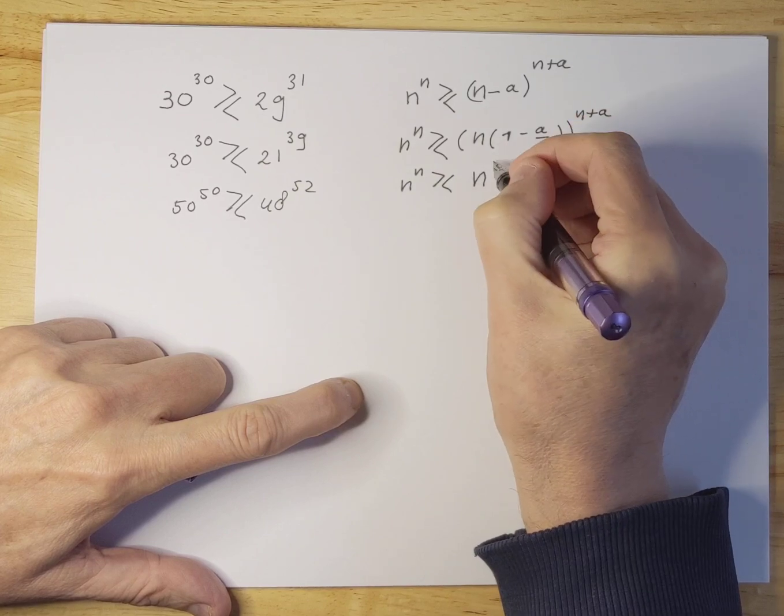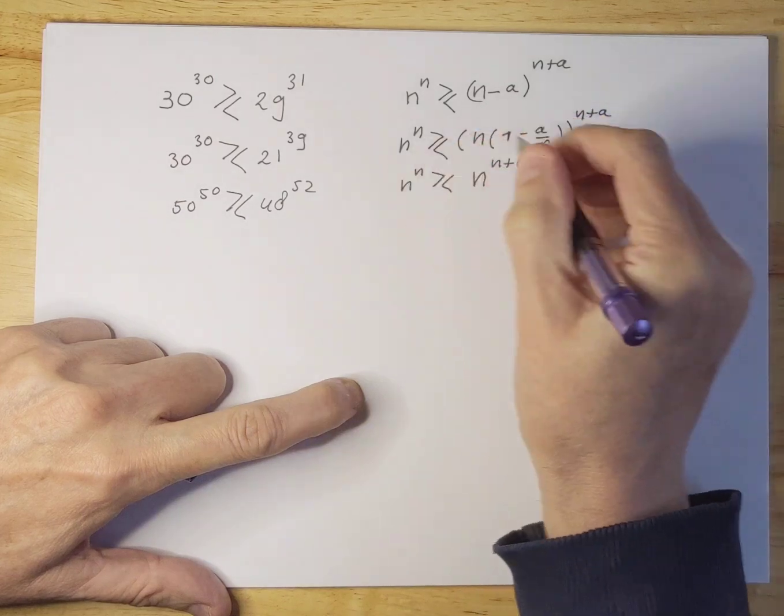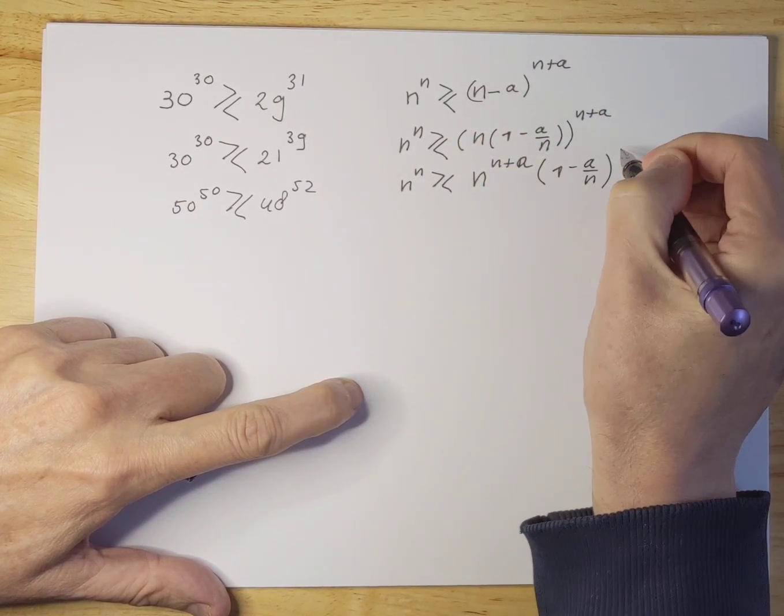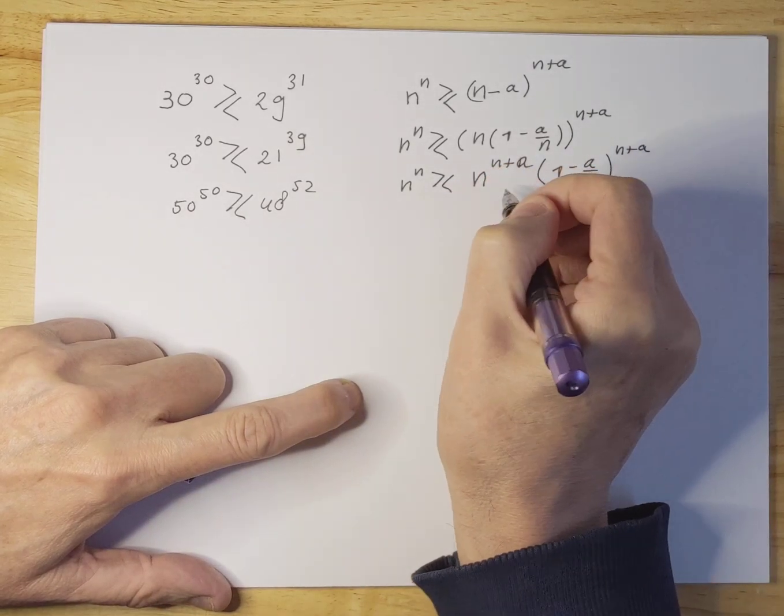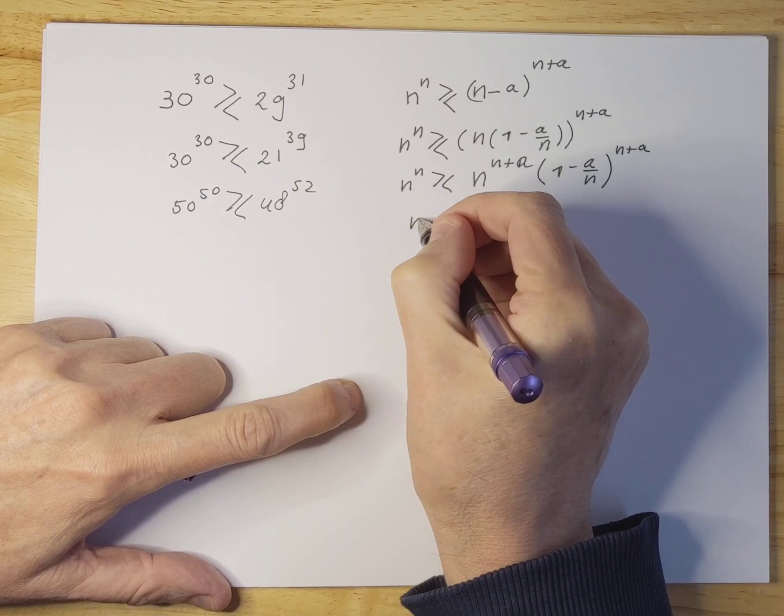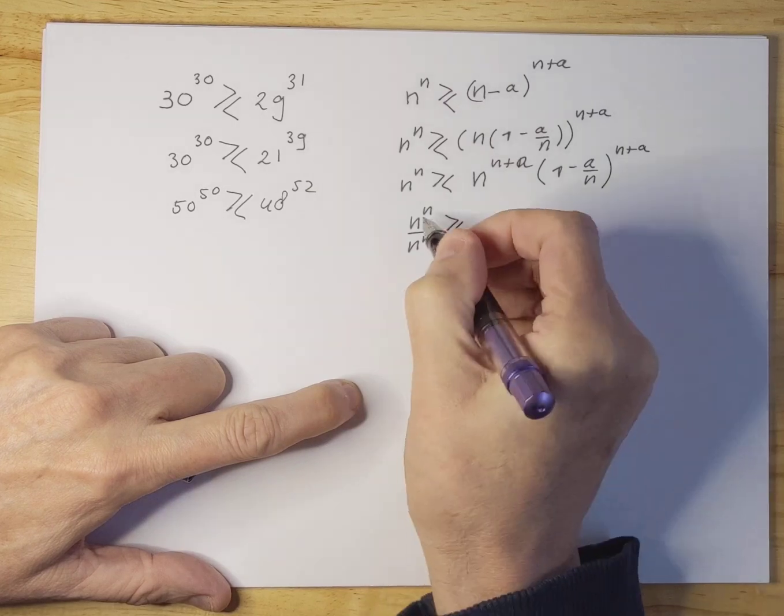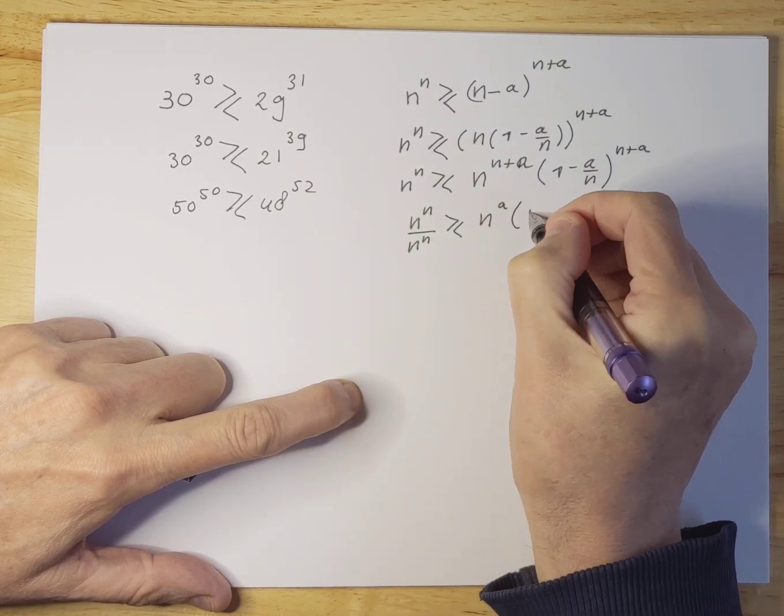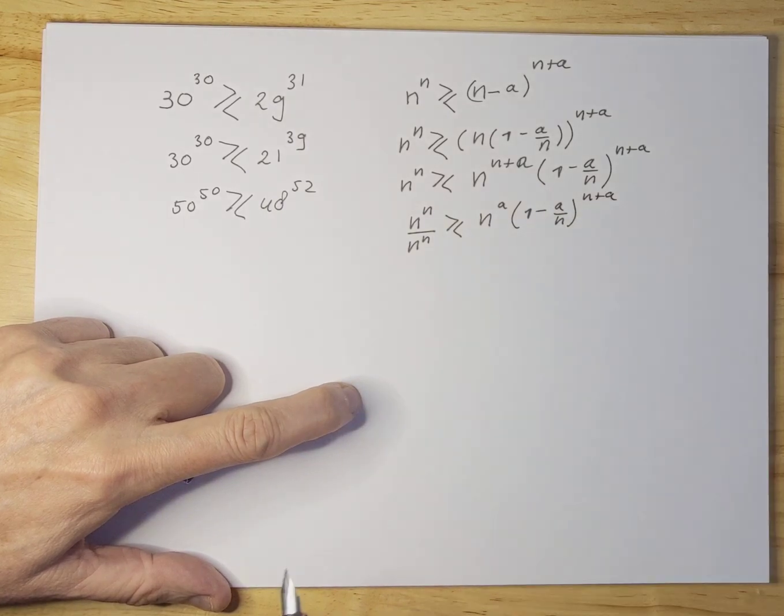We're going to say n to the power of n plus a, we take that out times 1 minus a over n to the power of n plus a. And this is going to be rewritten as n to the n divided by n to the n, because that will be one, and then we have n to the a times 1 minus a over n to the n plus a.